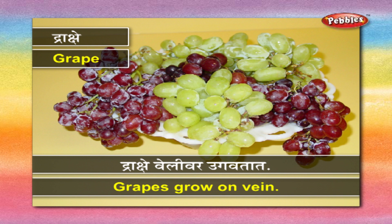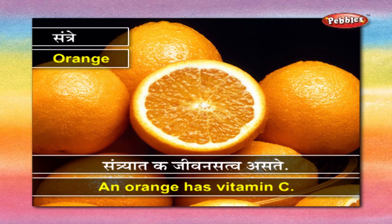द्राक्षे - द्राक्षे वेलीवर उगवतात. संत्रे - संत्र्यात जीवनसत्व असते.